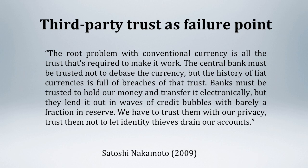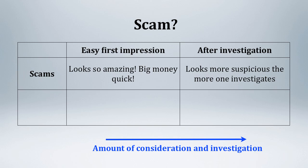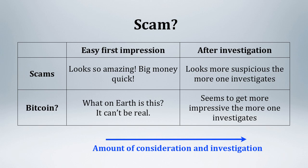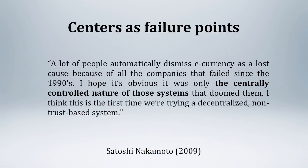Instead of looking more closely, however, a more common response has been to look hardly at all and then dismiss Bitcoin or even warn that it must be a scam or a Ponzi scheme. But one of the telltale signs of a scam is that the more closely one looks, the more suspicious it appears. My experiences with learning about Bitcoin have suggested just the opposite — the more carefully that people investigate, the more interested they seem to become. As Nakamoto wrote in 2009: a lot of people automatically dismiss e-currency as a lost cause because of all the companies that failed since the 1990s. I hope it's obvious that it was only the centrally controlled nature of those systems that doomed them. I think this is the first time we're trying a decentralized, non-trust-based system.